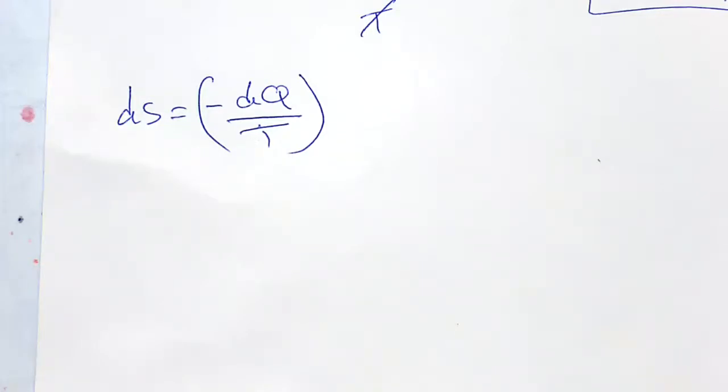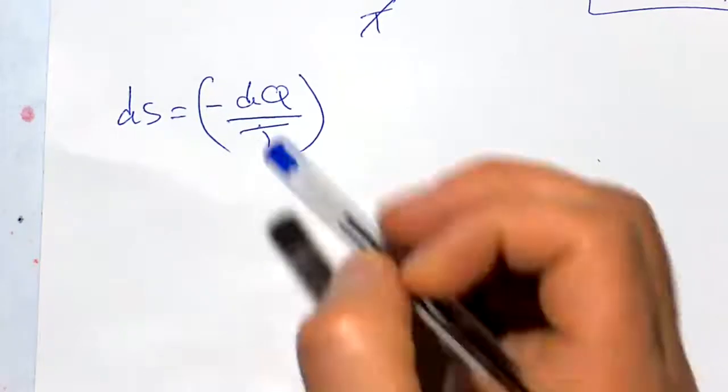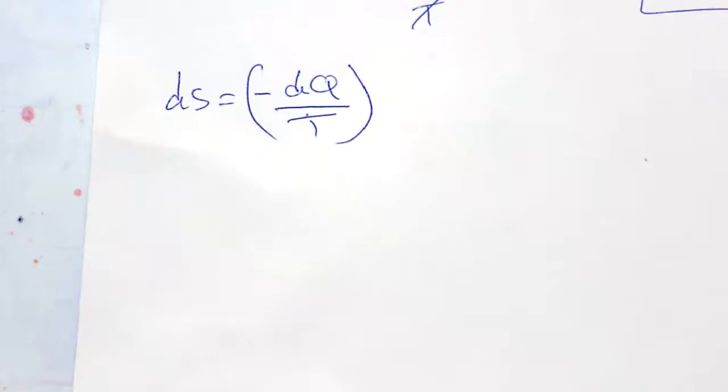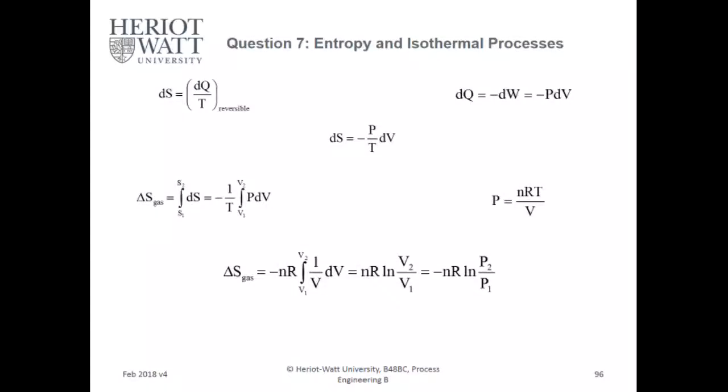And if you want to determine an equation for the entropy change of the reservoir in terms of pressure ratio, then delta S equals delta. So that's correct, because I need to have it recorded.